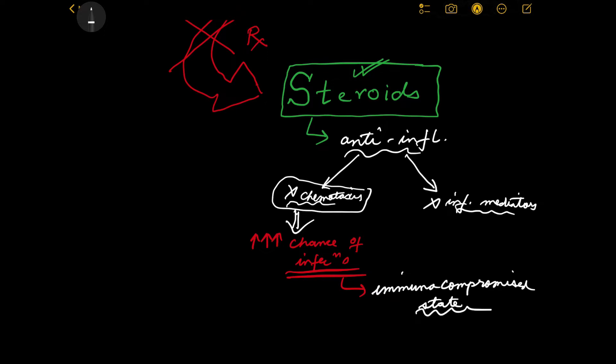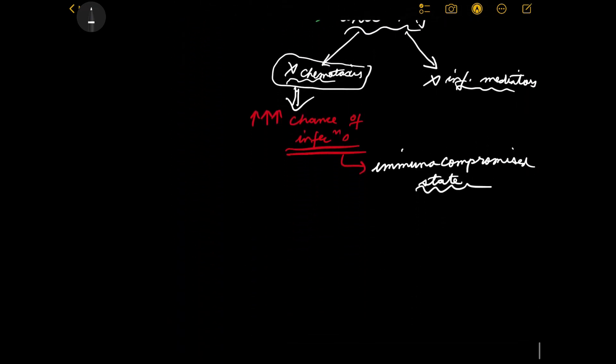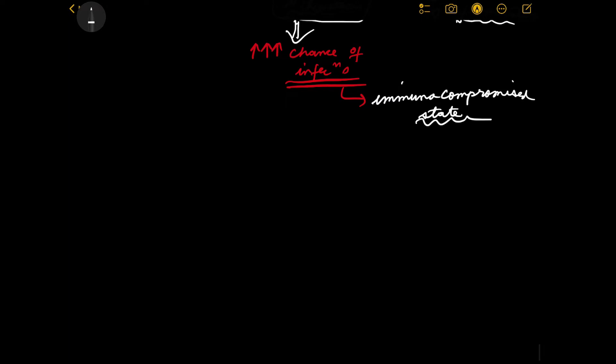Now let's move on to the next step. The WBCs have reached the source of infection - what can the next step be? What were the leukocytes meant to do in the first place? This is the most important step: the actual killing of those microorganisms, the actual removal of those foreign bodies, whatever the source of inflammation is.